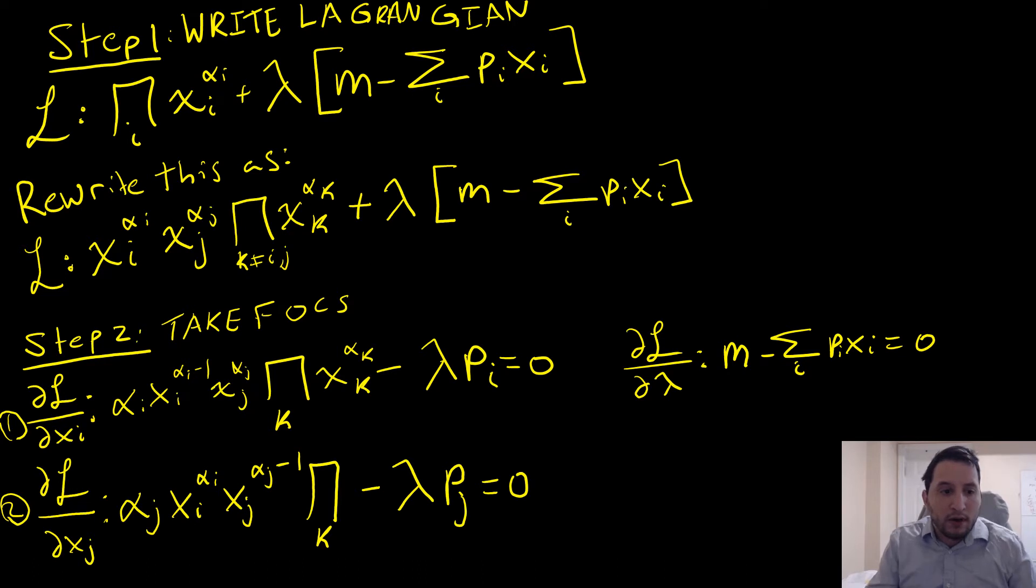We're going to write our Lagrangian. To make our lives a little bit easier, we're going to rewrite this as follows. What this does for us is that it allows us to keep count of x_i and x_j while ignoring this whole thing. We haven't changed anything with this expression.